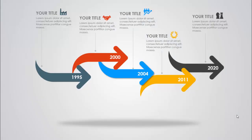In today's tutorial, I'm going to show you how to make an arrow shape timeline slide in PowerPoint. As you can see, I've added five arrows of different colors, and at the bottom I have added the shadow effect. Here you can add your title and change the detailed text. If you have icons, you can add those also. Let's see how to do this in PowerPoint.